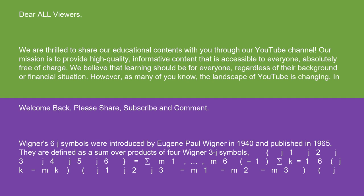Welcome back! Please share, subscribe, and comment. Wigner's 6J symbols were introduced by Eugene Paul Wigner in 1940 and published in 1965. They are defined as a sum over products of four Wigner 3J symbols.